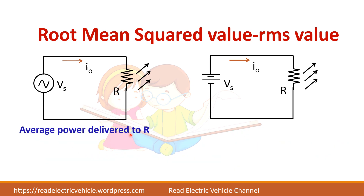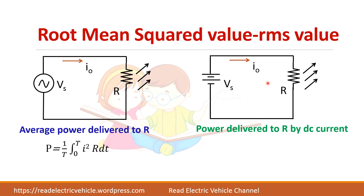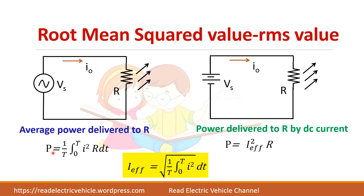To derive the RMS formula: average power delivered to a resistor in an AC circuit is P = (1/T) × ∫₀ᵀ I²R dt. For a DC circuit, power is I²R. Equating both, I_effective² = (1/T) × ∫₀ᵀ i²(t) dt, so I_effective = √[(1/T) × ∫₀ᵀ i²(t) dt]. I_effective and I_RMS are the same — the RMS value is also called the effective value.